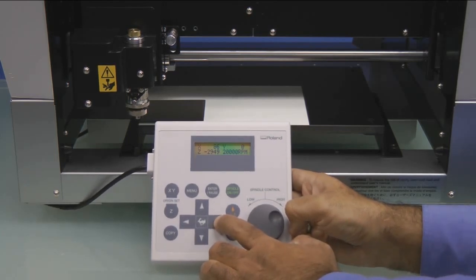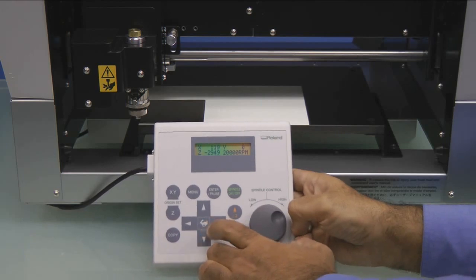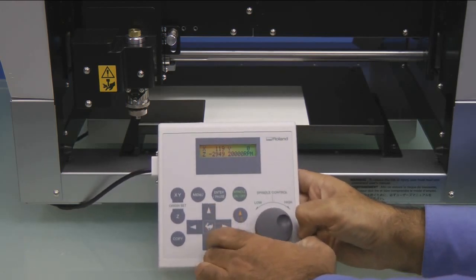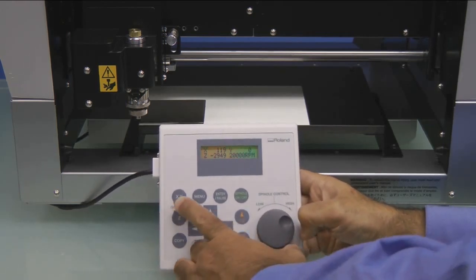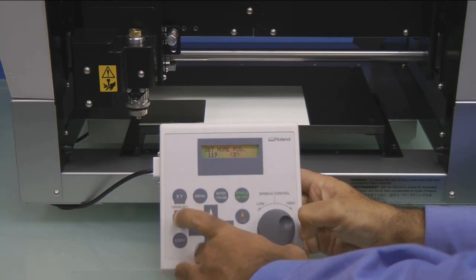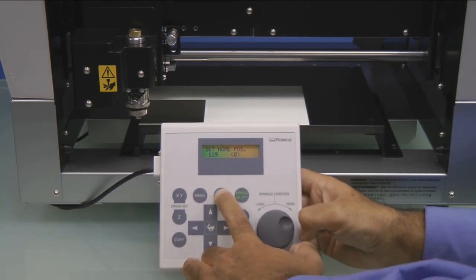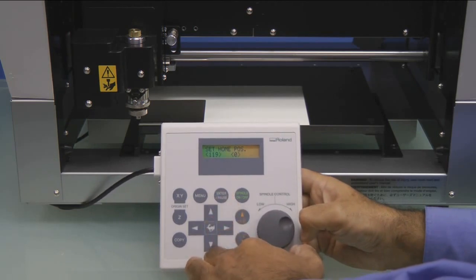Using the arrow keys, move the spindle over the corner of the material. The center of the nose cone should be over the lower left corner. Press X, Y origin set, and press Enter to place the brackets around the value. This sets your Home position.